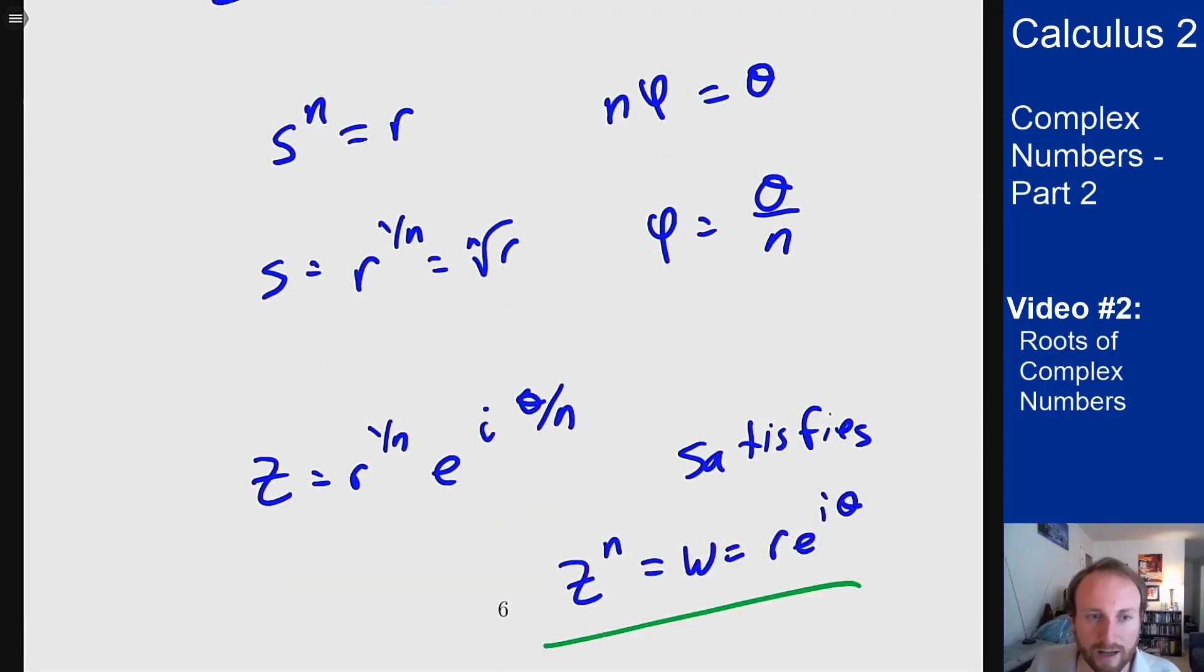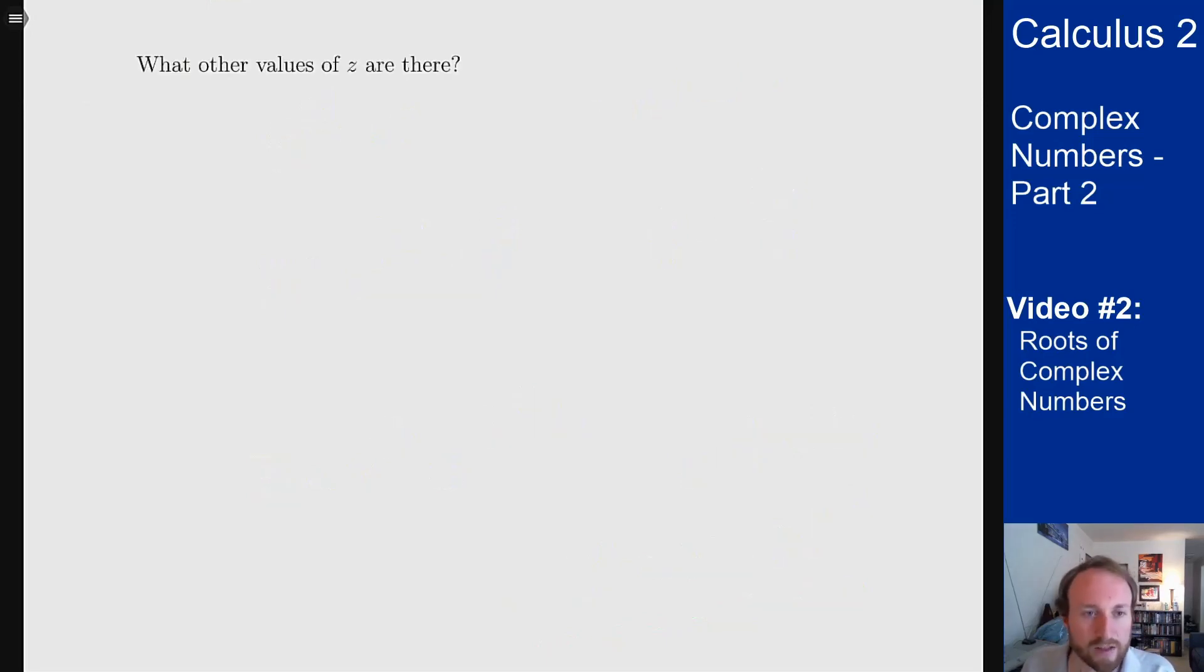However I had an nth degree polynomial here. Right, it was z to the n equals w but I only found one solution. Are there other solutions that I can get to, are there other complex numbers that make this work? And the answer here is yes there are. There are actually n complex numbers to make this work. And the idea here is the following.